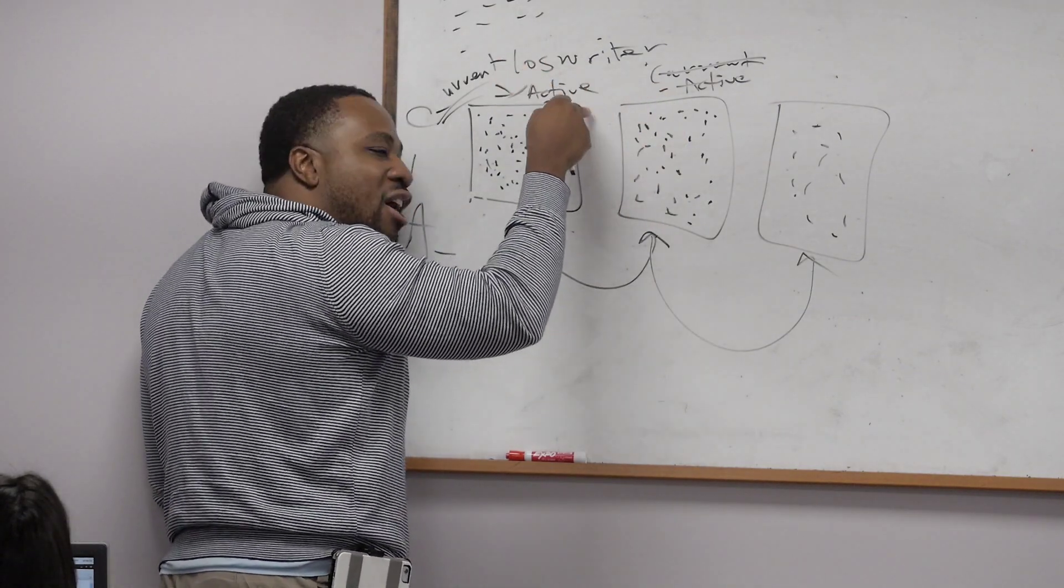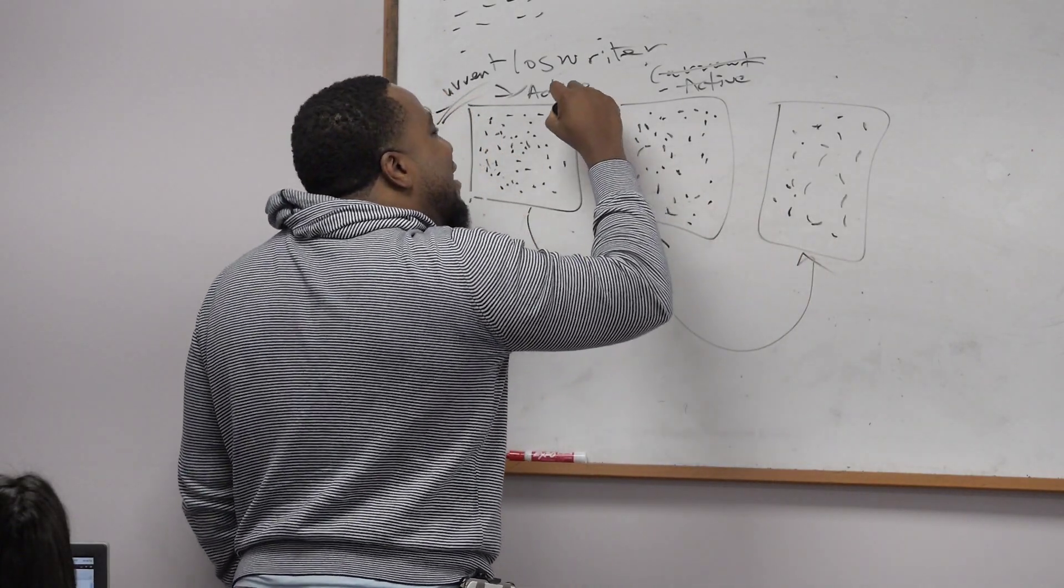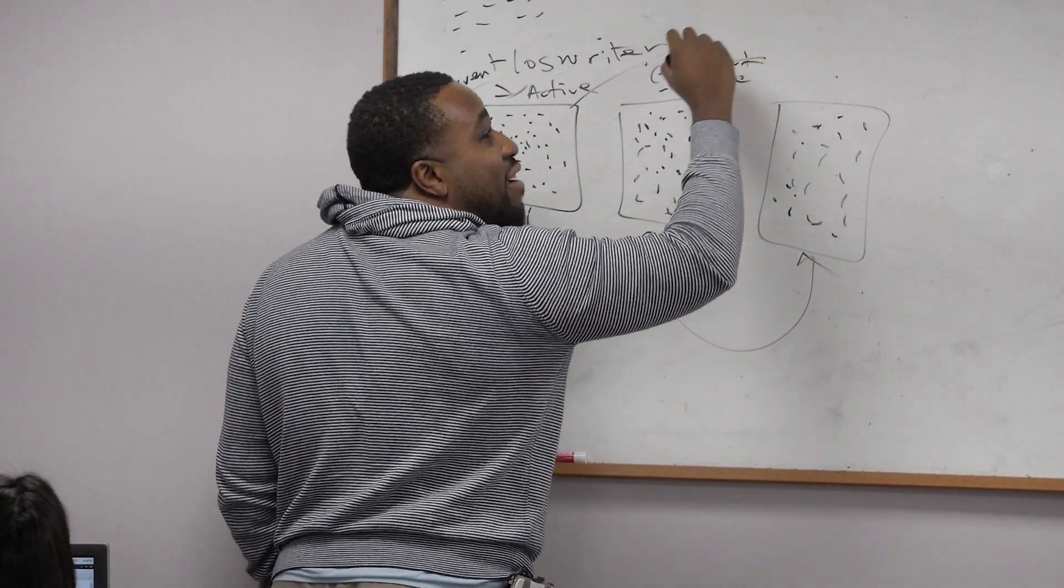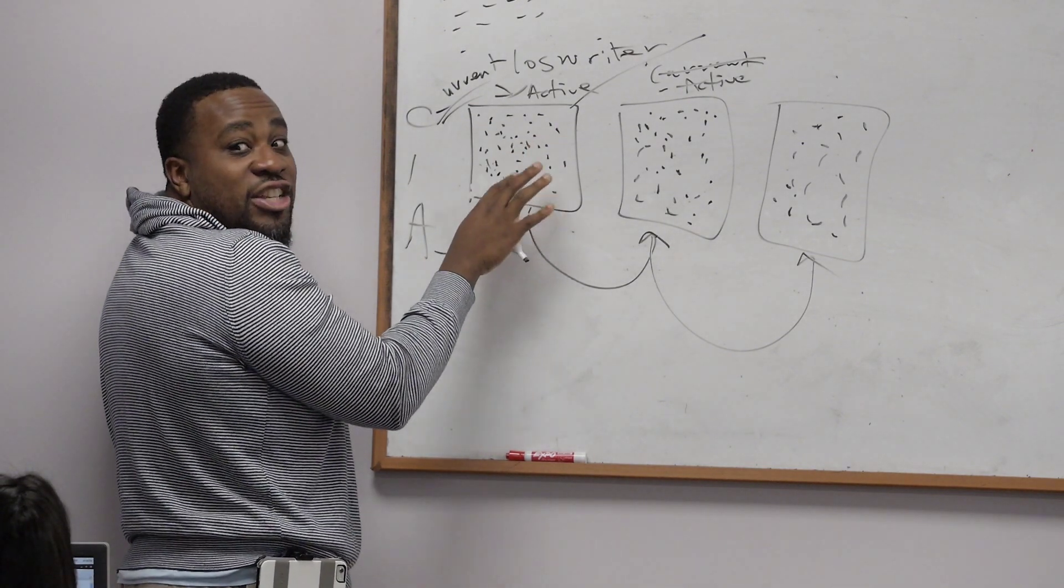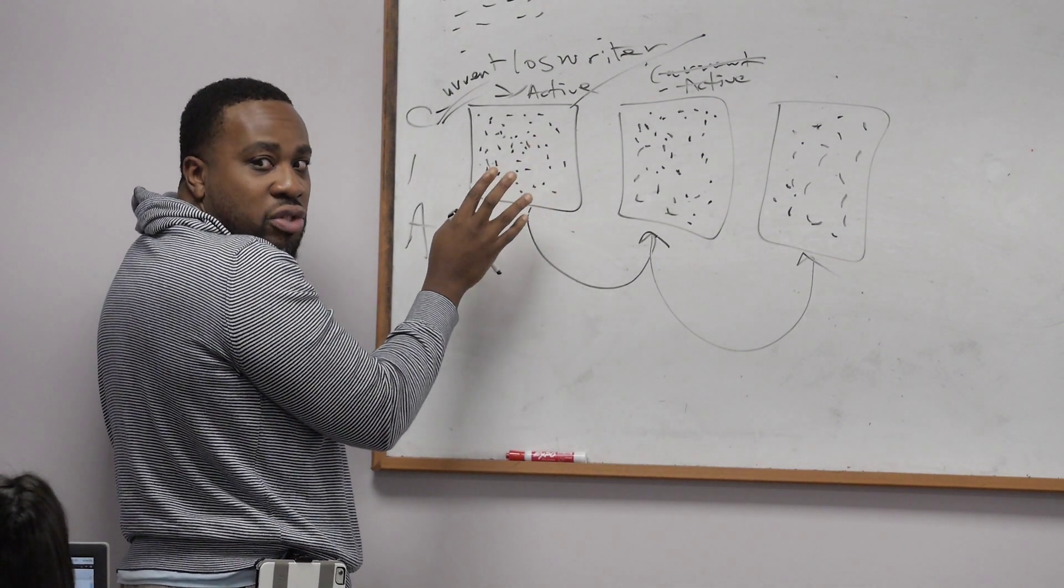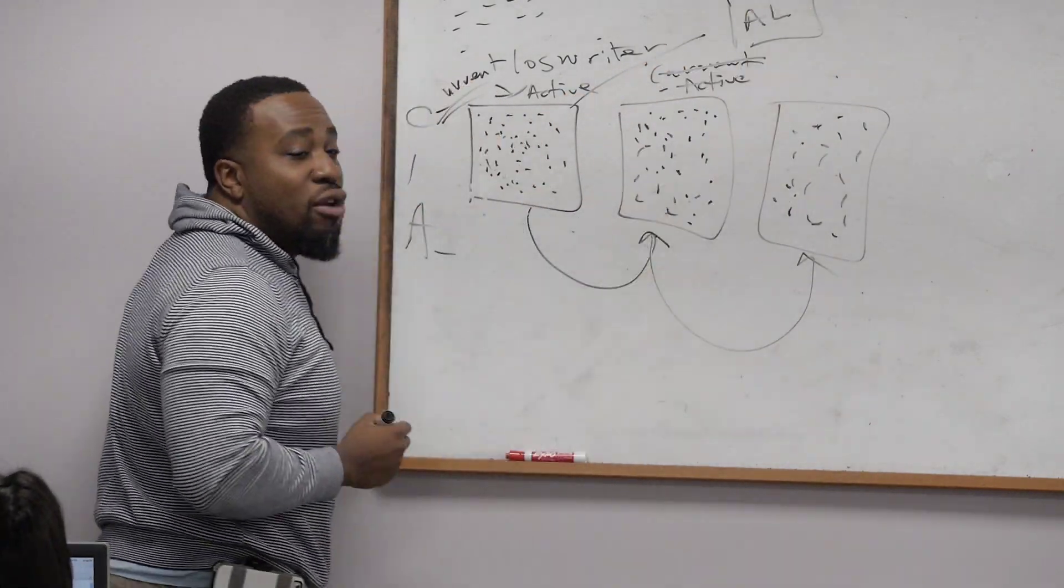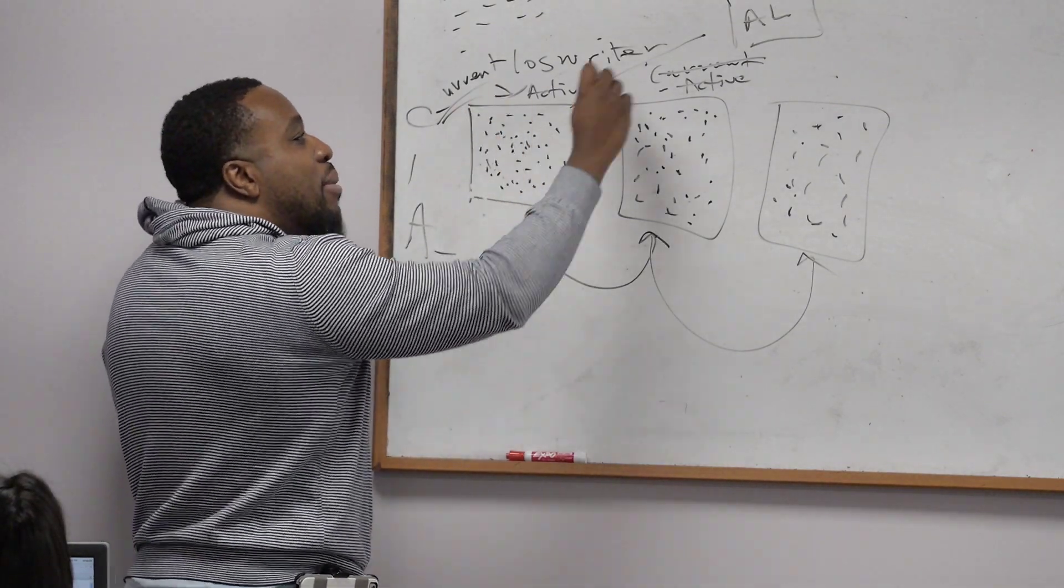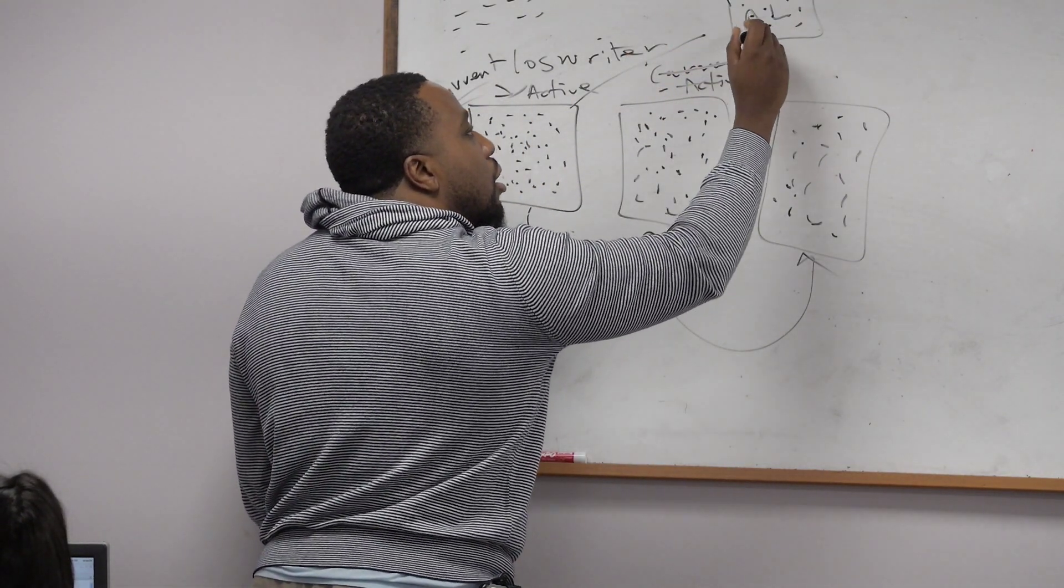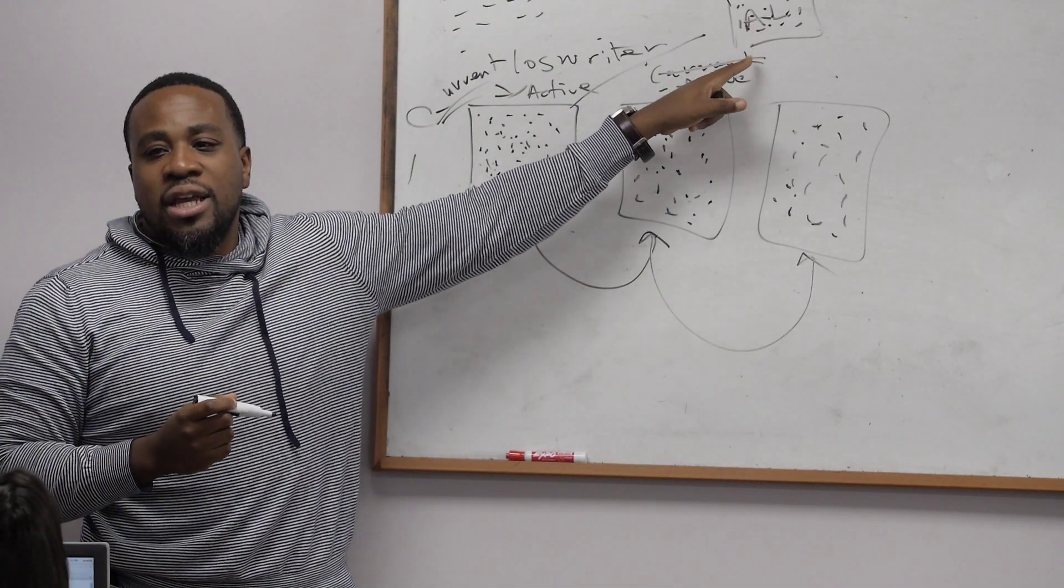What happens is this: if your database is in archive mode, as this guy is writing, this guy right here is archiving, is sending copies of the change vectors. Because all these dots are the change vectors - description of the changes - to the what? The archive log file. So all these change vectors inside this guy are being copied to this guy.